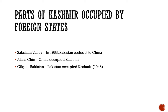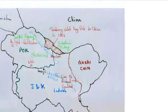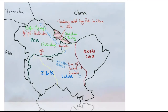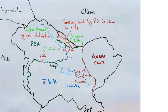Now we will look at the India-Pakistan map. You can see that on the western side is Pakistan-occupied Kashmir, and the southern part of that is also called Azad Kashmir. On the eastern side you can see Aksai Chin, which is occupied by China, and on the northern side is the small territory called Shaksgam Valley, which Pakistan gave to China in 1963.